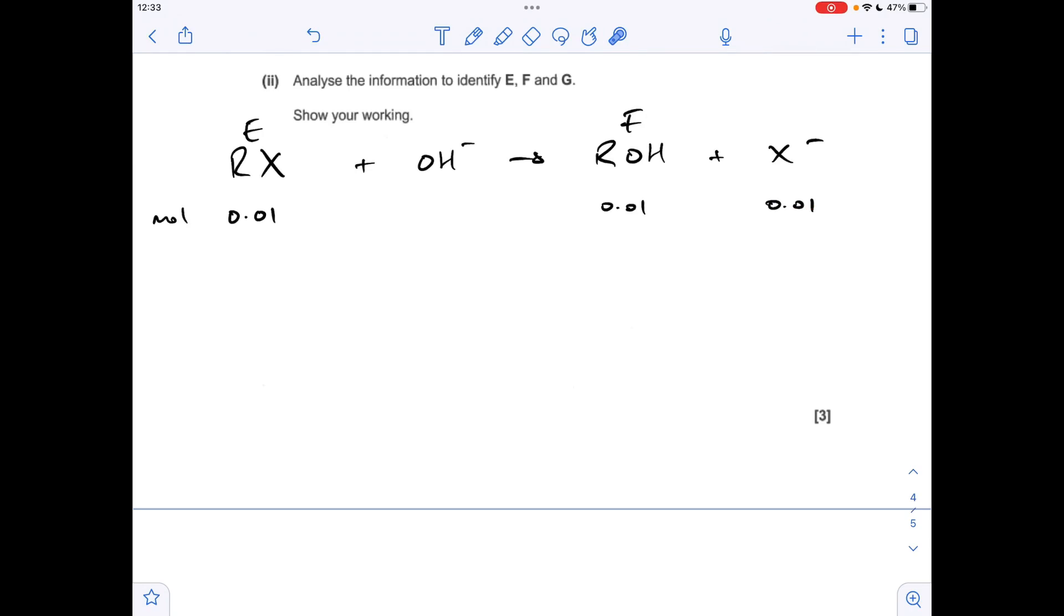So then if you think about the silver nitrate, it's going to react, the silver ions are going to react with these halide ions and make a precipitate. So that means we're going to make 0.01 moles of the precipitate. Remember that's G. Now because we know the mass of this, we can work out its MR. So mass over moles gives 188. So if we subtract the MR of silver now, so that leaves 80.1 for the halide.